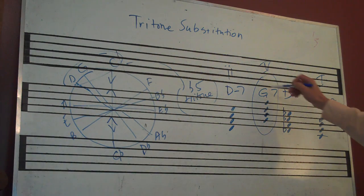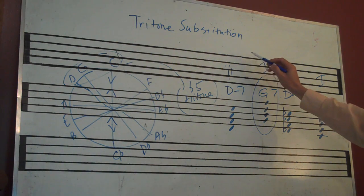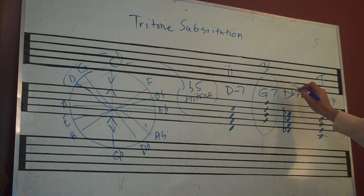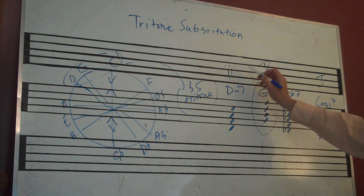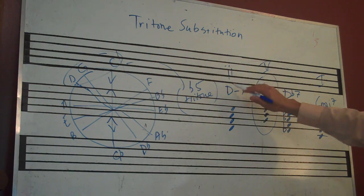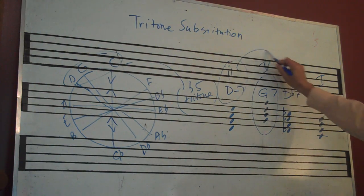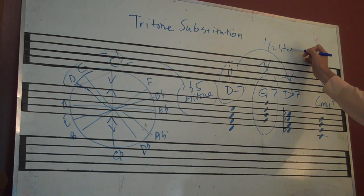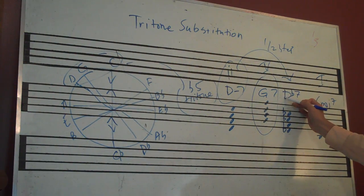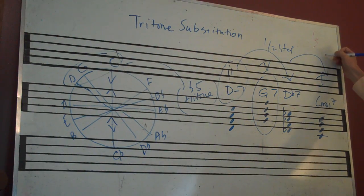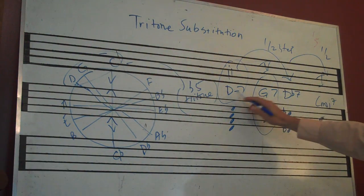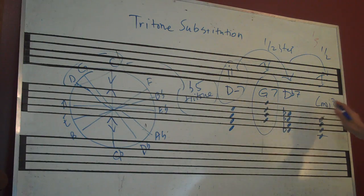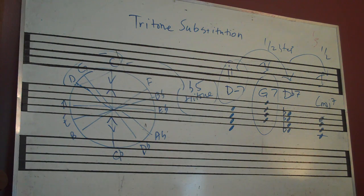If you look at what's going on here, you've got this descending motion of the chords descending in half steps. You've got D minor 7, it goes down a half step to D flat, and then down another half step to C. See that motion? D, D flat, C. Listen to it again as the descending motion.